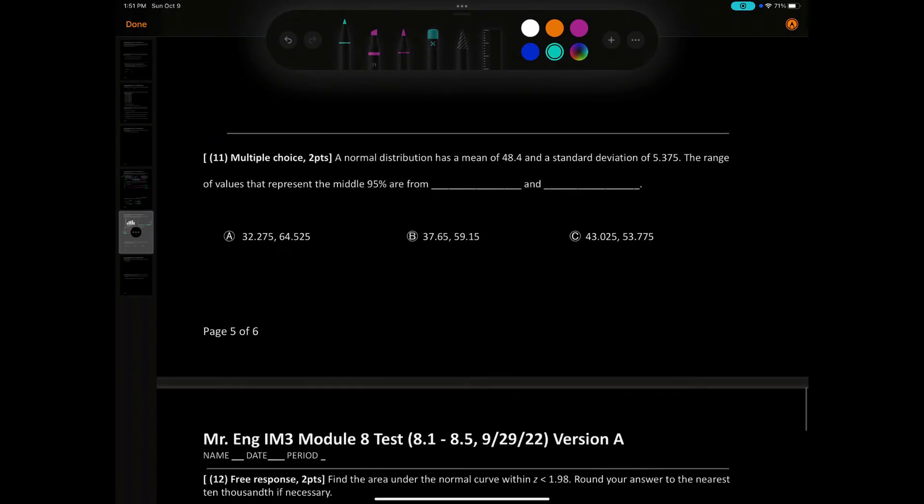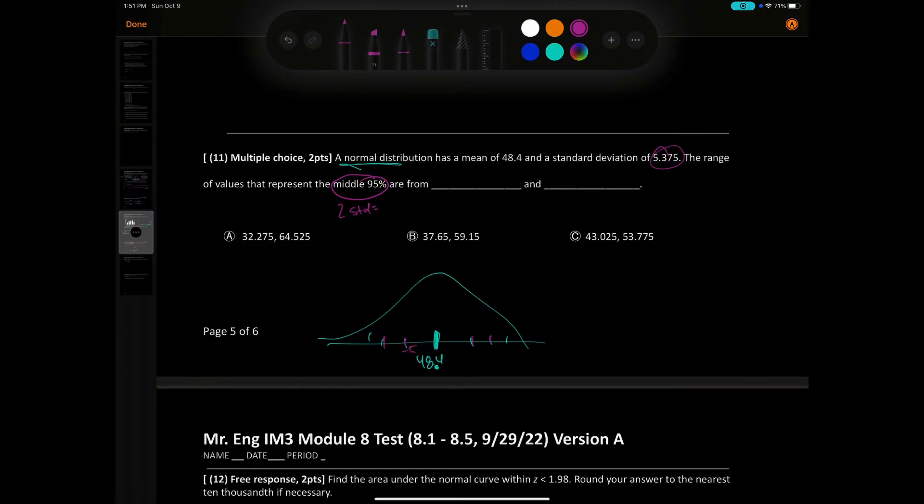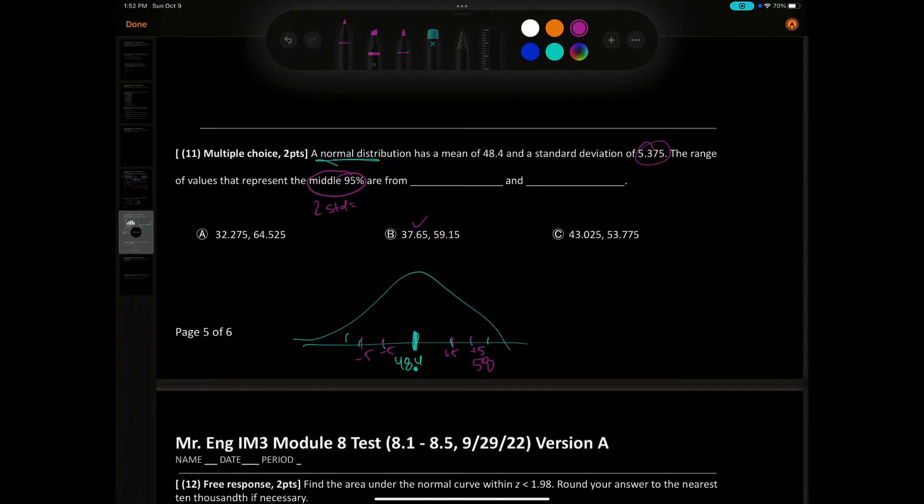Number 11. A normal distribution has a mean of 48.4 and a standard deviation of 5.375. The range of values represents the middle 95%. 95% is two standard deviations. So 1, 2 and a 1, 2. I would just subtract 5 from there, and if I round by subtracting 5 from each of these, so minus 5, I get 43, 37. This one, and then I keep adding 5 this way, so 53 and then it's like 58, 59. So B is the correct answer.